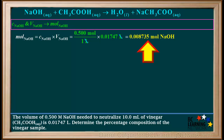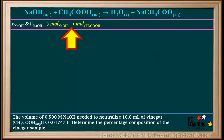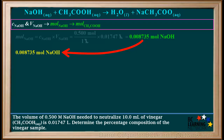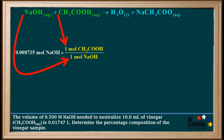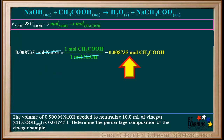We'll work with one extra significant figure and round to three significant figures in the last calculation. In the next step, using the moles of NaOH, we calculate the moles of CH3COOH at the equivalence point of the titration. We write down 0.008735 moles of NaOH and multiply by the coefficient ratio of CH3COOH to NaOH in the balanced equation, which is one mole of CH3COOH to one mole of NaOH. Cancelling out the moles of NaOH, the sample of vinegar solution contains 0.008735 moles of pure CH3COOH.